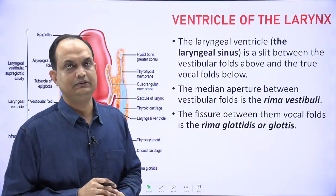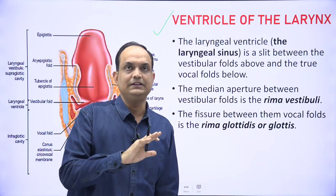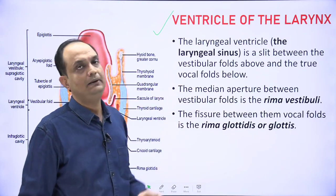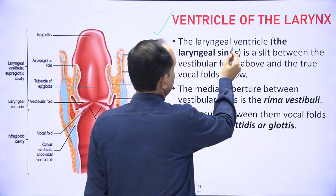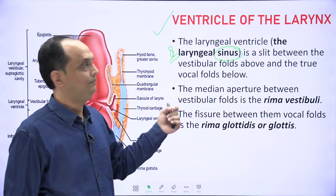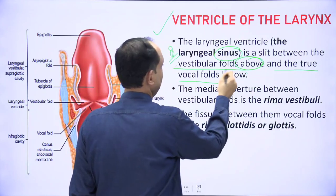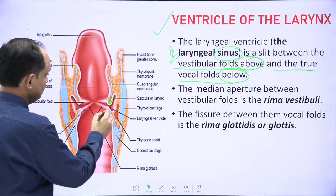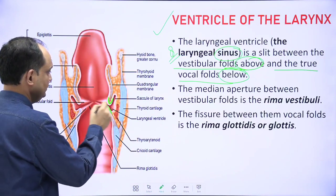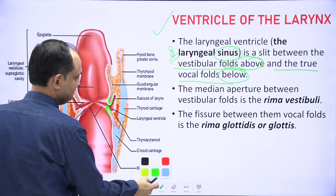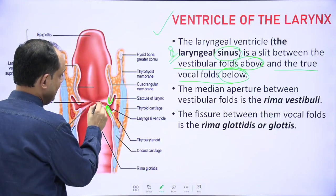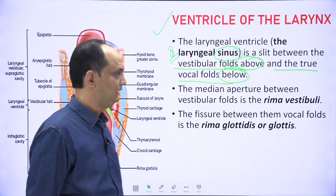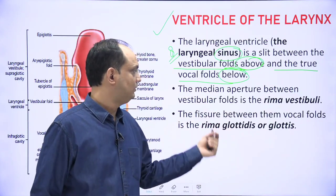What is the ventricle of the larynx? The vestibule is the upper part and the ventricle is the middle part. The laryngeal ventricle is also known as the sinus of the larynx. It is a slit between the vestibular fold above and the true vocal cord below. In the diagram, the lower free edge of the quadrangular membrane is the vestibular fold, and the upper free edge of the conus elasticus is the true vocal cord. The space or slit-like gap between these two folds is the ventricle. The median aperture between the vestibular folds is the rima vestibuli, and the fissure between the vocal cords is the rima glottidis or glottis.